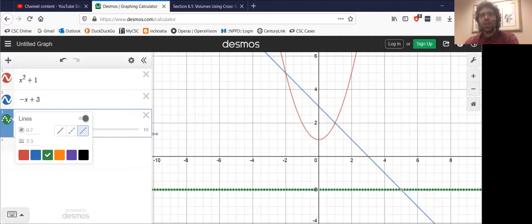Your first step with these problems pretty much has to be to graph them. Otherwise, you're not going to be able to distinguish between the outer and inner radii.